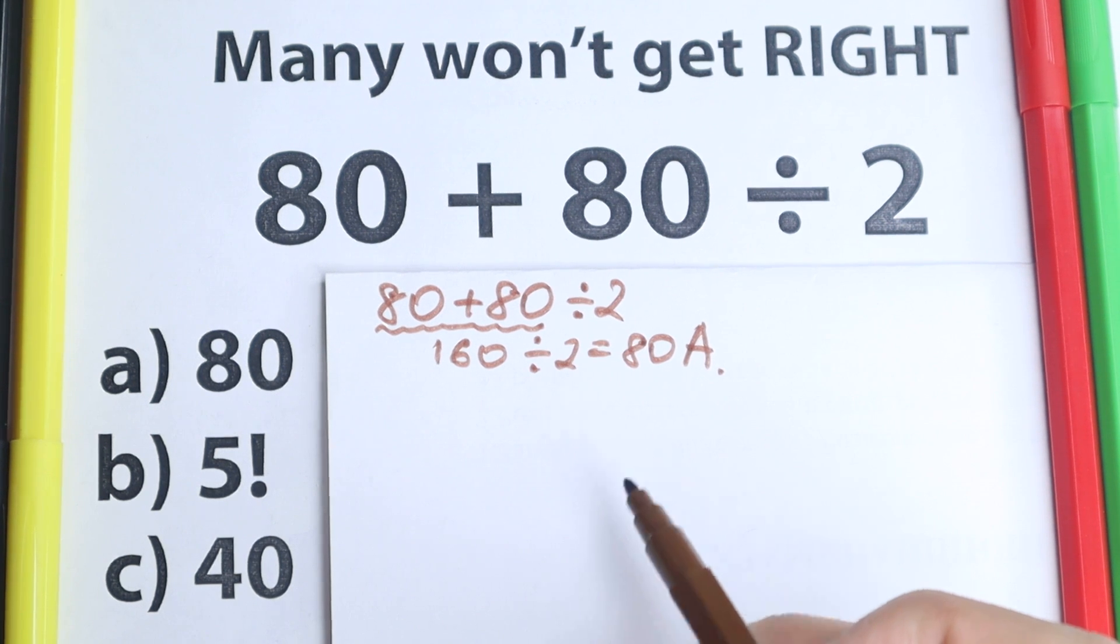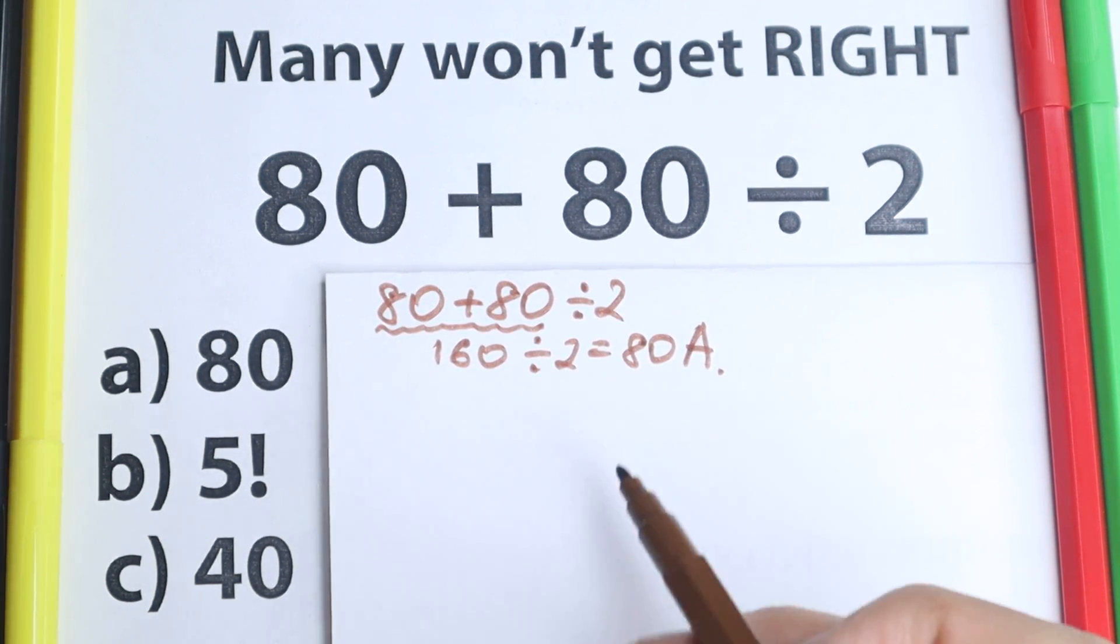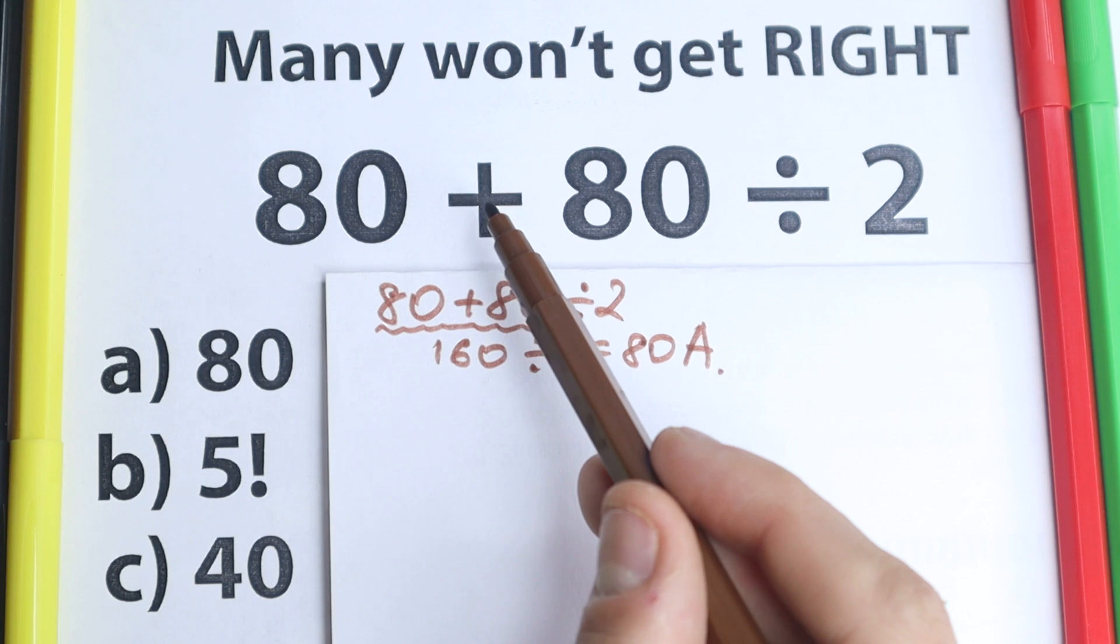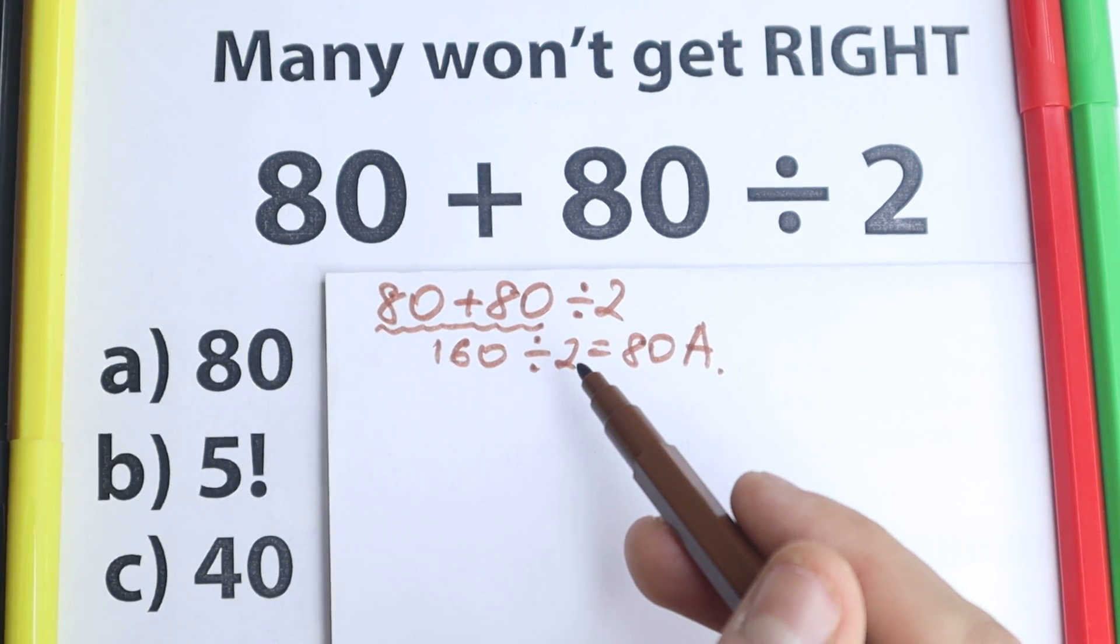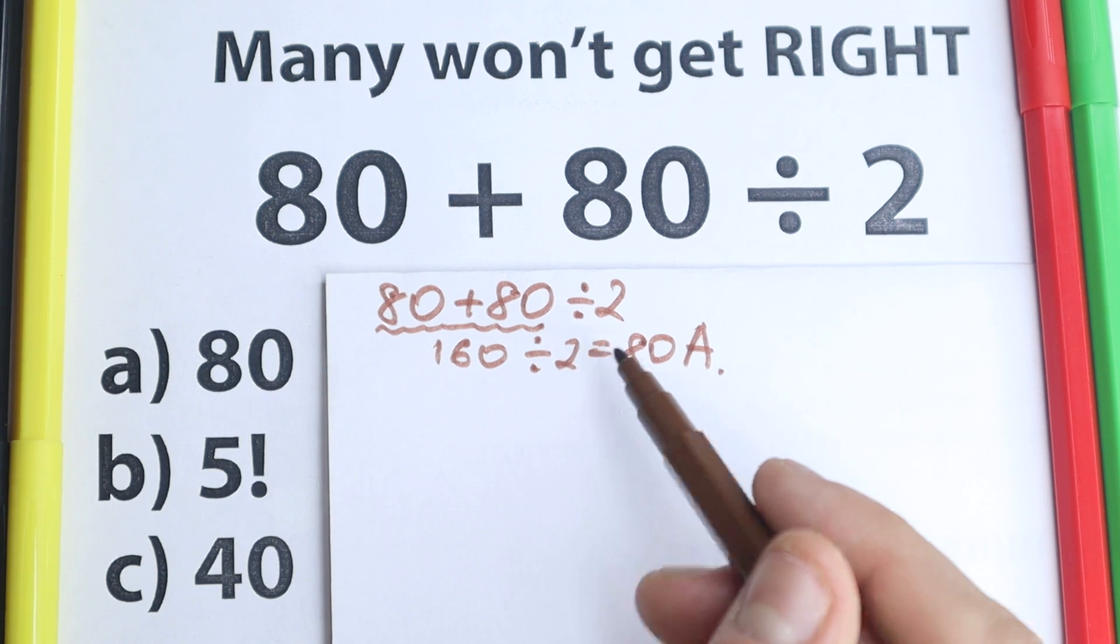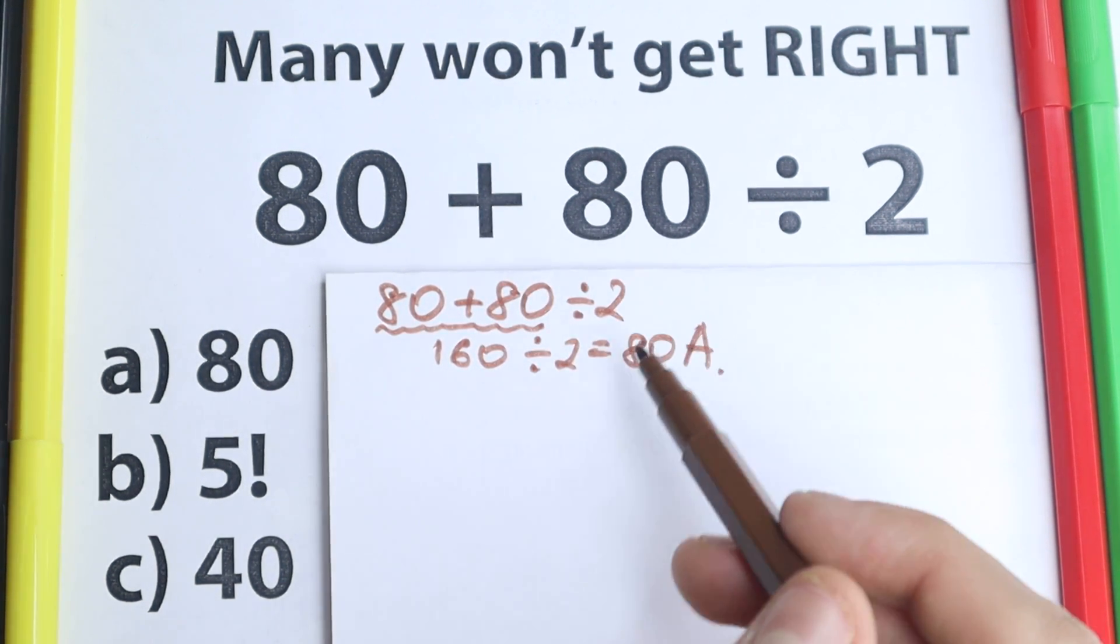Okay and right now I'm going to show you how can we solve it correctly with explanation. So as you can see we have two operations, we have addition and division. So here's our question. We need to know what is the correct order to do this problem. We need to add at first or we need to divide at first.